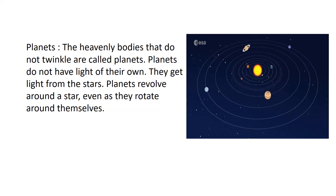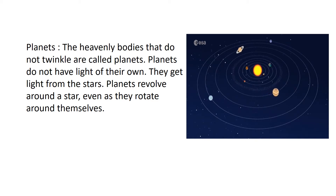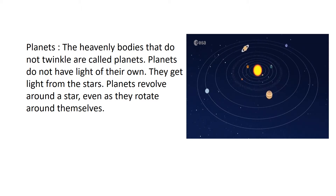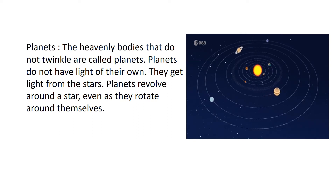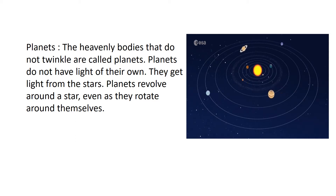Now we will see what are planets. Planets are heavenly bodies that do not twinkle. Planets do not have light of their own — they get light from the stars. Planets revolve around the star even as they rotate around themselves. In the following picture, we can see that the planets are revolving around the sun and rotating around themselves too.